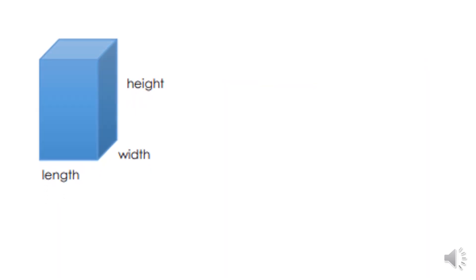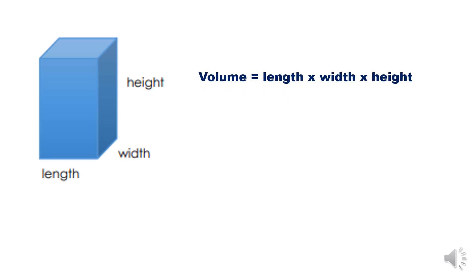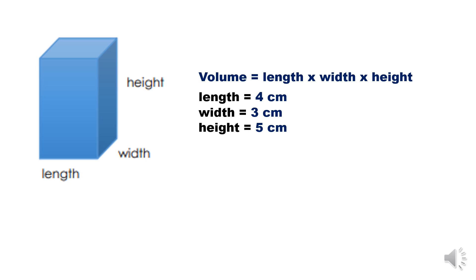This is a rectangular prism, and its dimensions are length, width, and height. The formula for finding the volume of a rectangular prism is: volume equals length times width times height. For example, if the length is 4 centimeters, the width is 3 centimeters, and the height is 5 centimeters, then 4 times 3 times 5 equals 60 cubic centimeters.